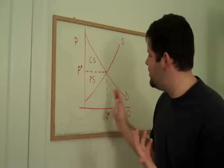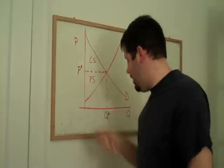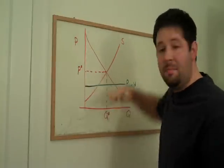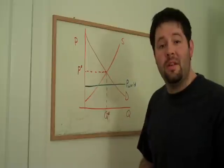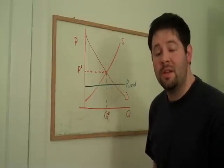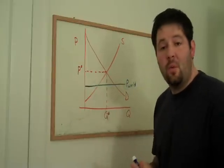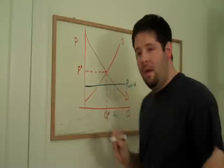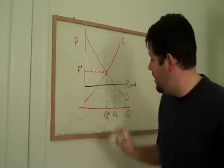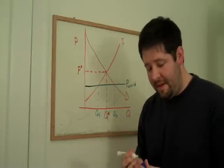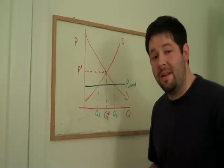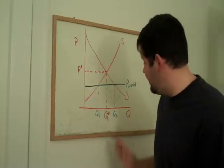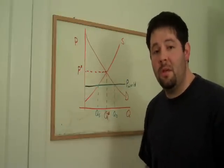Let's imagine that the world price was below P-Star. In this case, we've got a price that's below what the domestic equilibrium price was. At this world price, the quantity demanded is higher, and the quantity supplied is lower — that is, domestic quantity demanded exceeds domestic quantity supplied. So this difference is going to be imports.